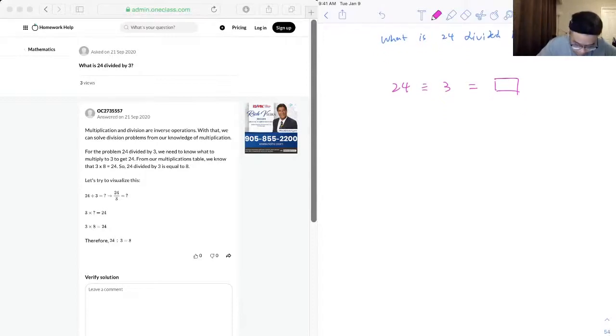I'll write this down here. So, 24 divided by 3 is equal to, let's call it x,